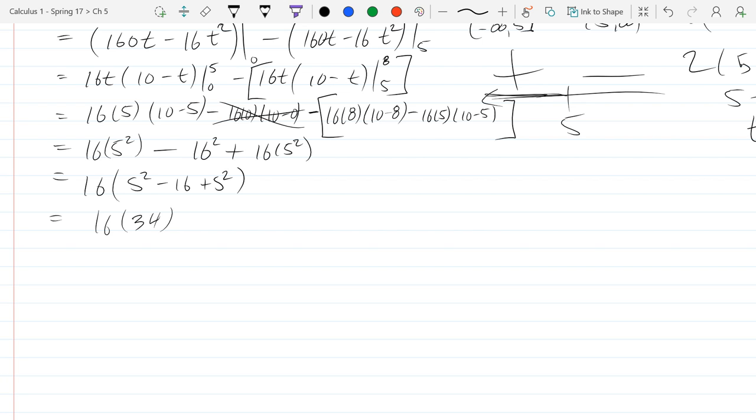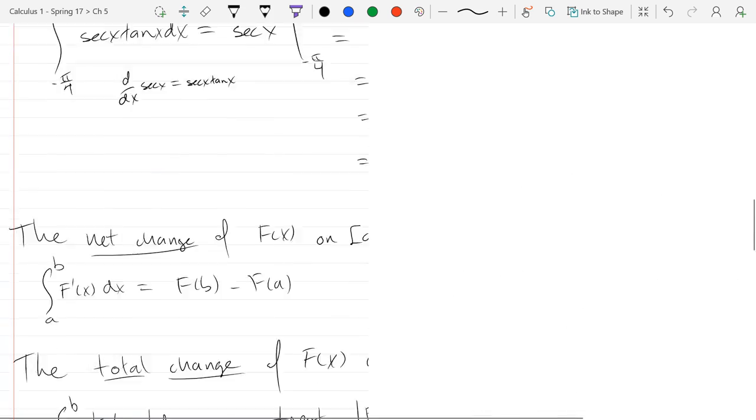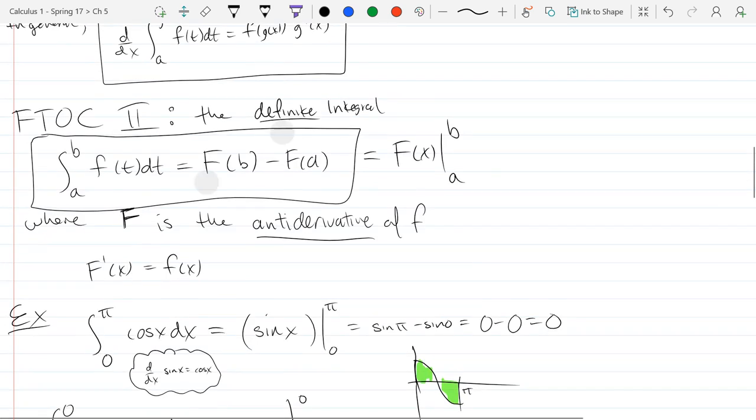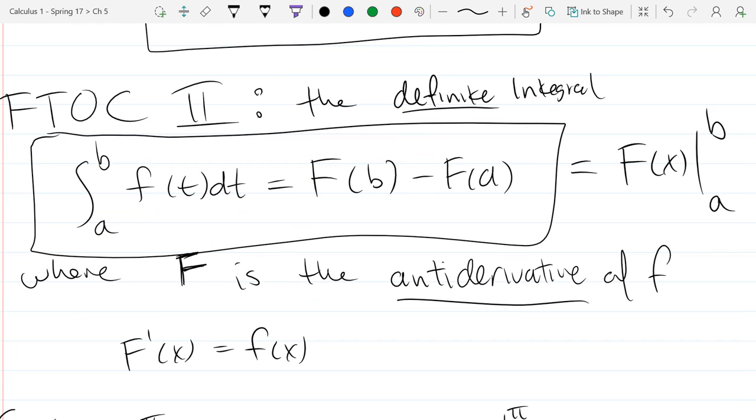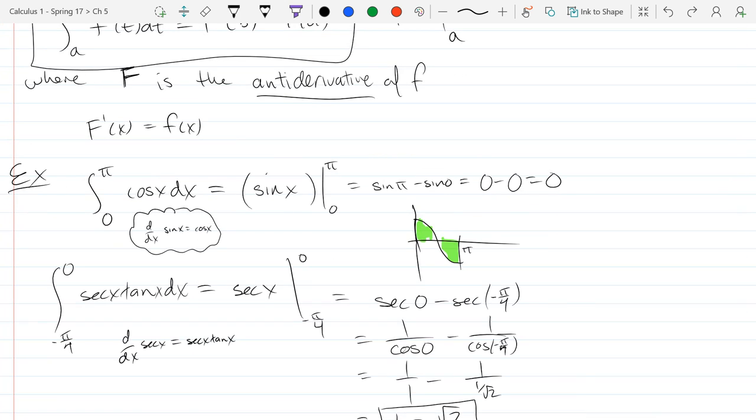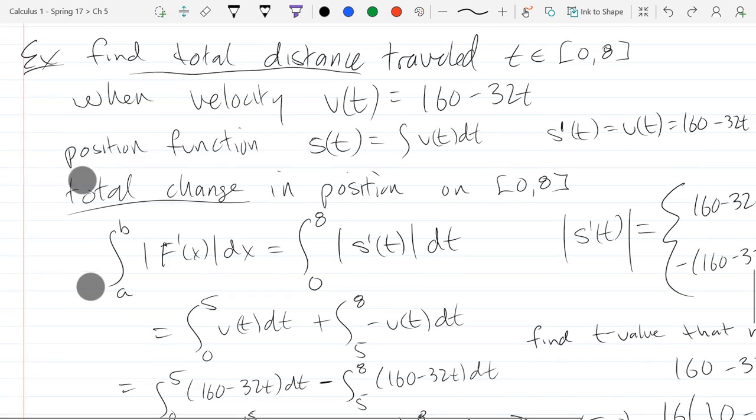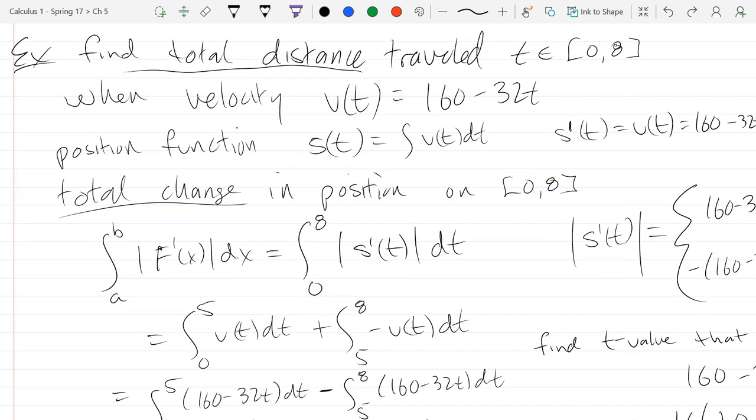So it's always the top term minus the bottom term. Yes, absolutely. So that's our, wherever that went, right here. So it's always going to be, generally B is going to be bigger than A, but that's not necessarily true, because you can swap them and it becomes negative. But it's always going to be top minus bottom. So that was total distance traveled. So total is the magic word that you're basically finding absolute value. You want to count everything as positive.